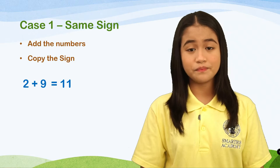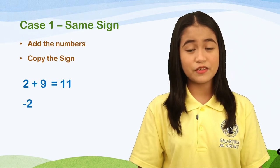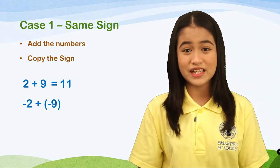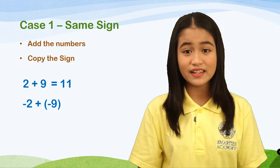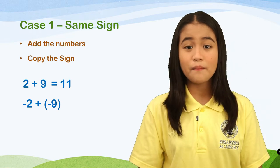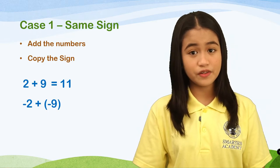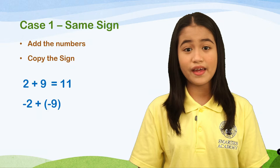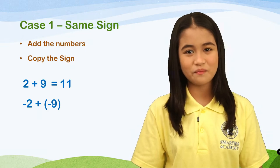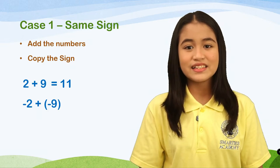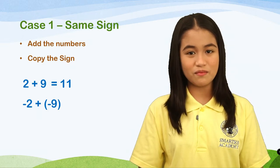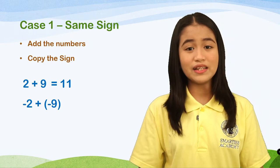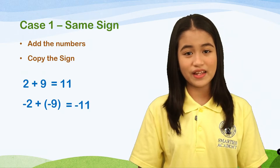Example number 2: negative 2 plus negative 9. Do they have the same sign? Yes! Because 2 and 9 are both negative. So we will just add 2 and 9, and the answer is 11. Since they have the same sign, which is negative, we will copy the sign and write negative 11.